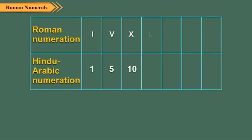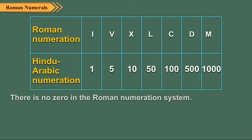Roman numeration system uses only 7 symbols to write any number. These symbols along with their values are given in the table. There is no 0 in the Roman numeration system.